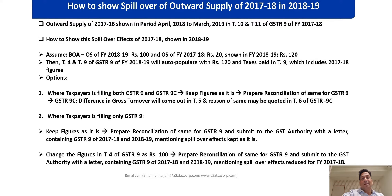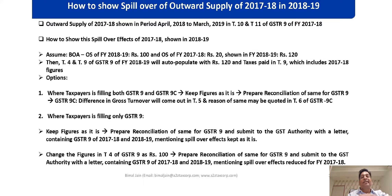The question before us is: this 20 rupees is pertaining to FY 17-18 — what is to be done and where is it to be shown? This spillover effect needs to be addressed. My answer depends on which category of taxpayer you are. If you are filing both GSTR 9 and 9C for 18-19...